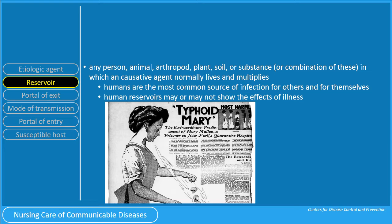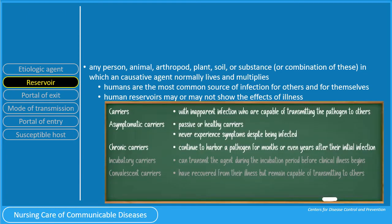A key point is that Salmonella typhi may produce a patient who eventually becomes a chronic carrier. Incubatory carriers can transmit the agent during the incubation period before clinical illness begins. Incubatory carriers exist when the incubation period overlaps with the infectious period, as can occur in some cases of chickenpox.